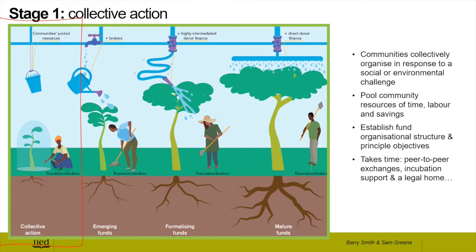How can climate finance best support local organizations that work with communities? The next four slides set out a journey that local institutions can evolve along if given correct support. As the institution evolves through different stages, it develops different capabilities and becomes more mature to draw down and manage larger sums of climate finance. Both local institutions and donors need to understand options for strengthening capabilities of different types of organizations, including the type of finance for each stage and partnerships that can help them develop faster.